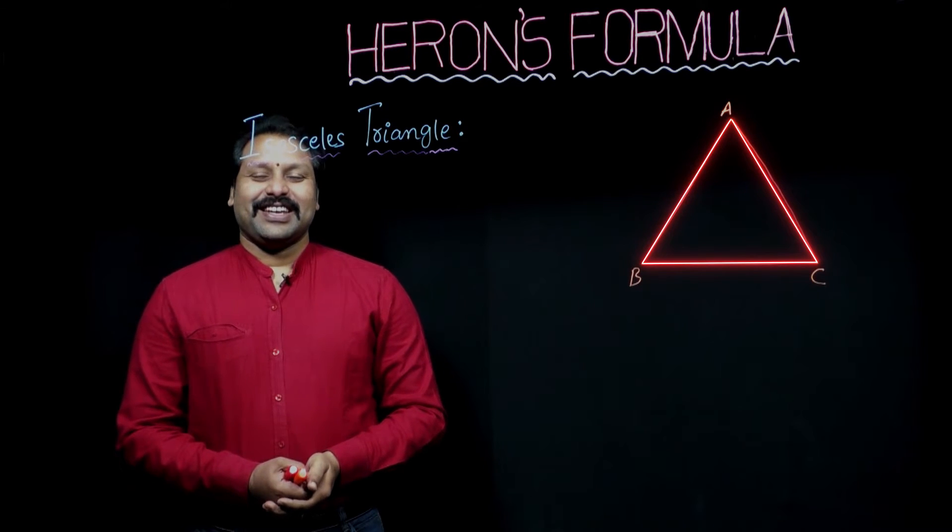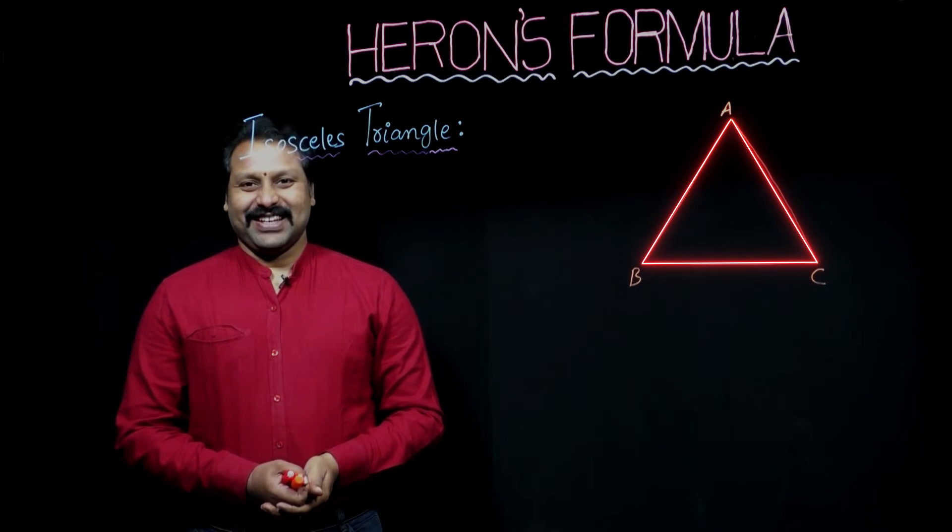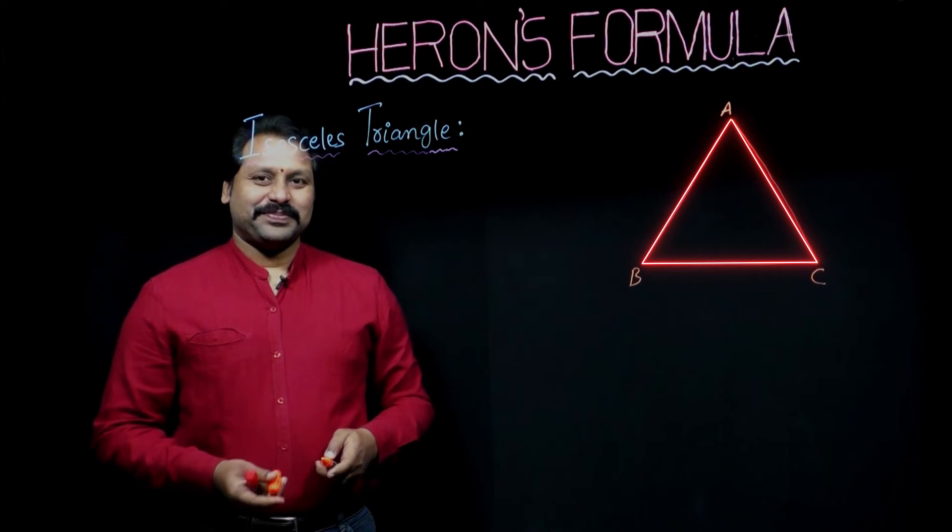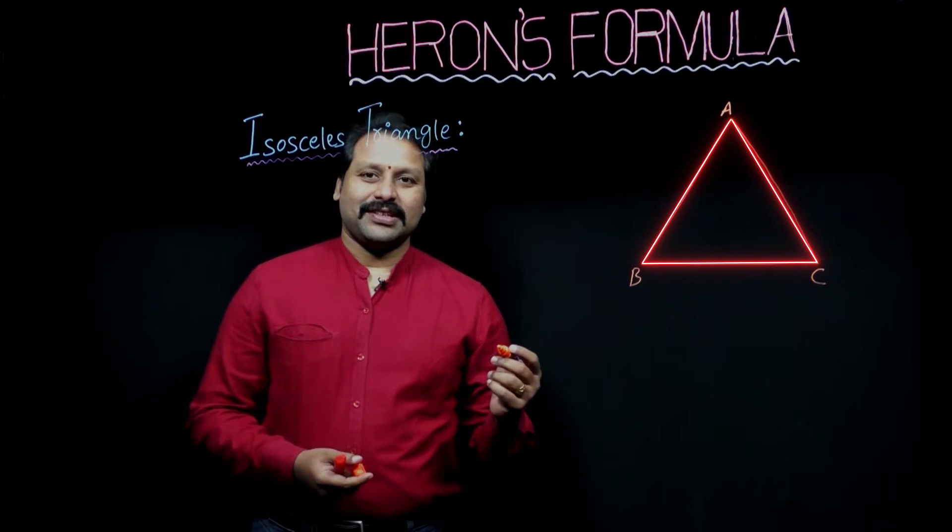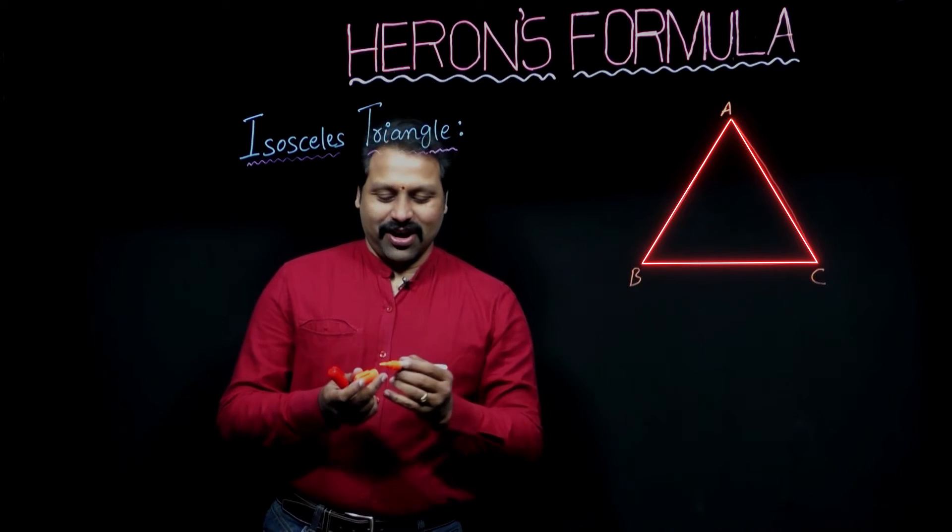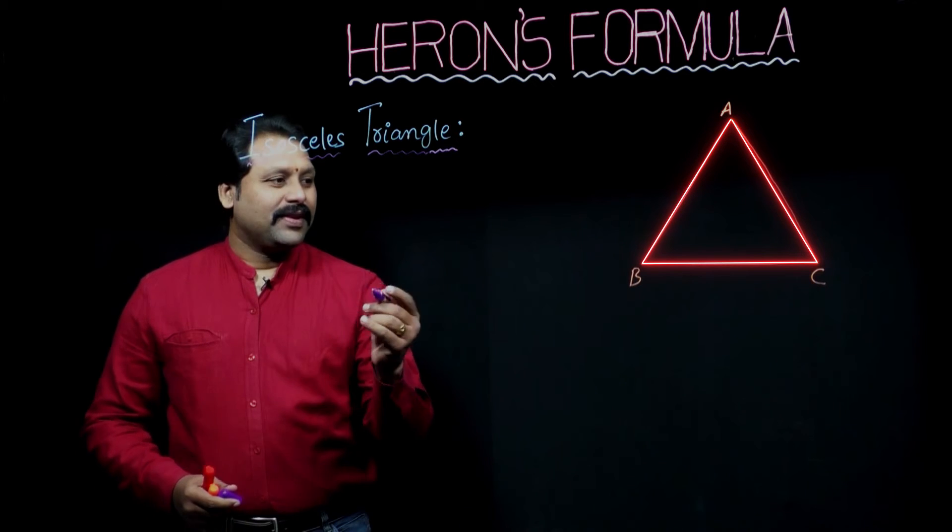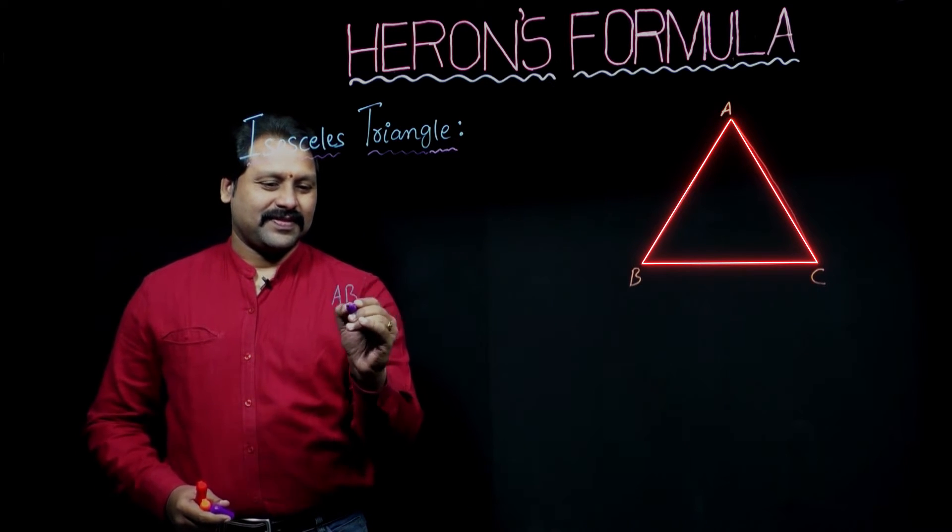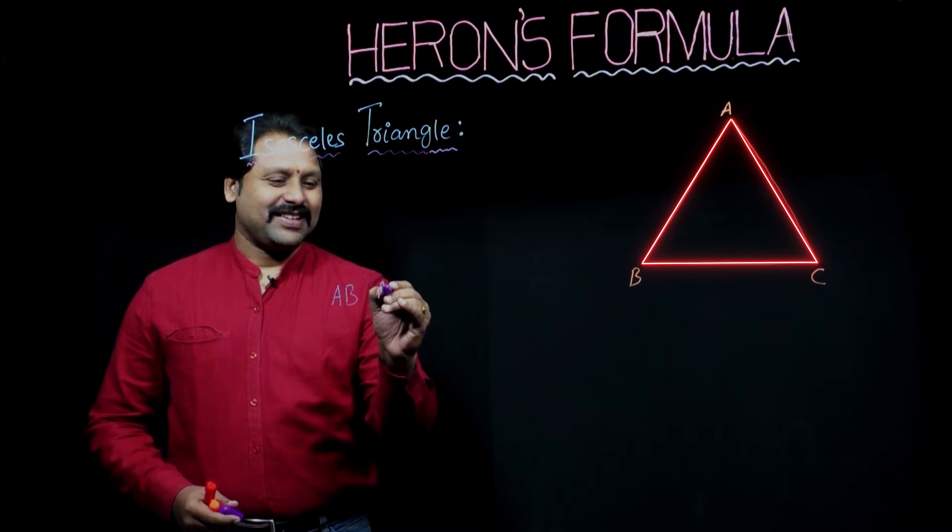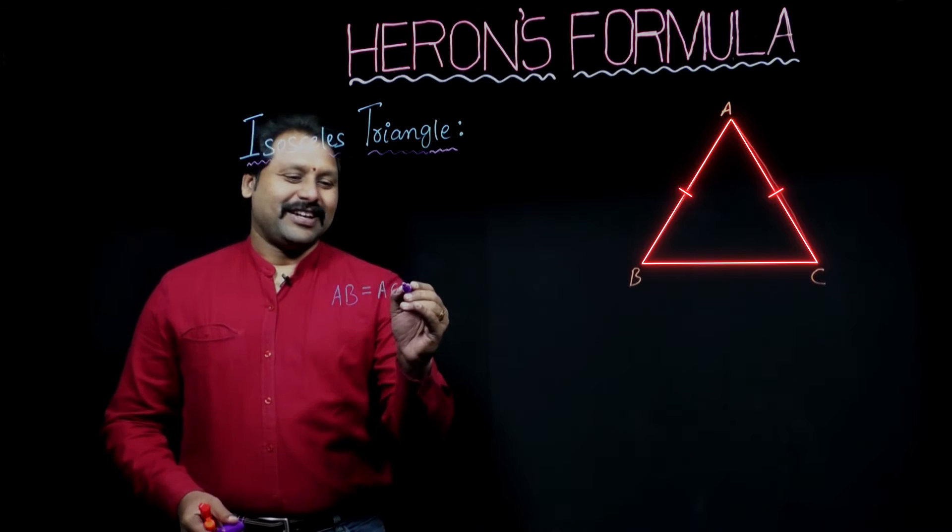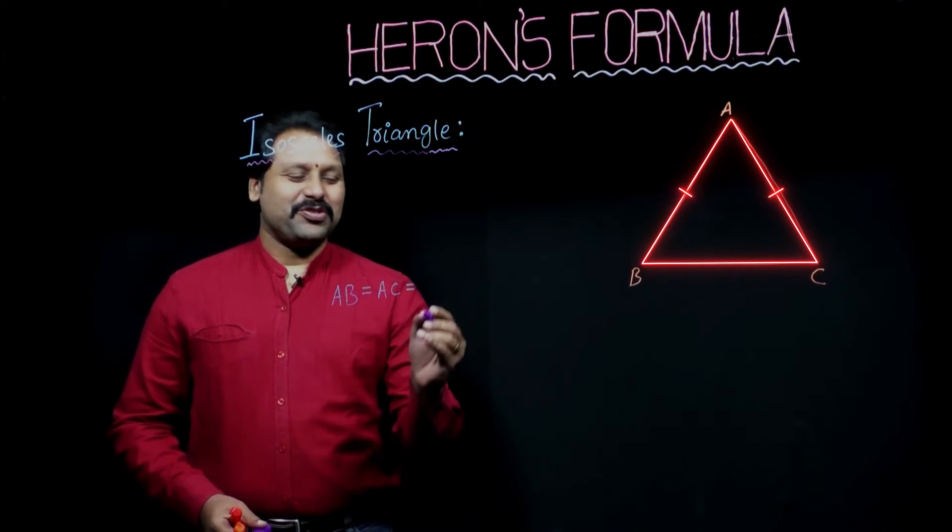That means any two sides are equal. So here, I would like to take the equal sides AB and AC are equal. Let it be A units.